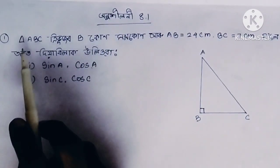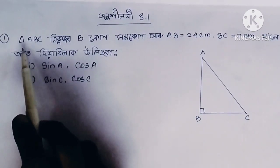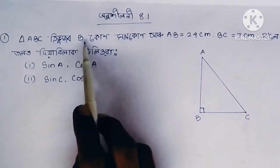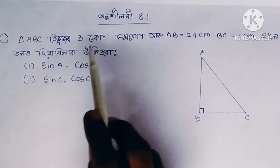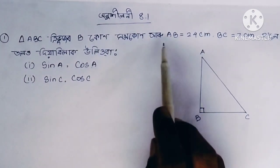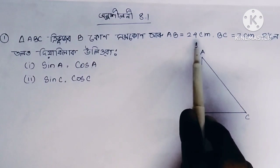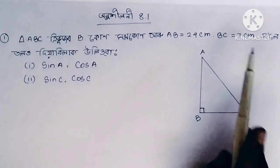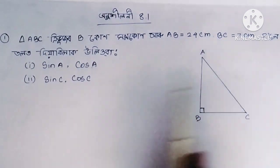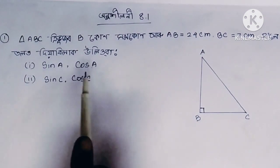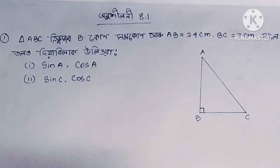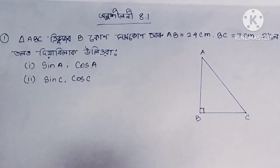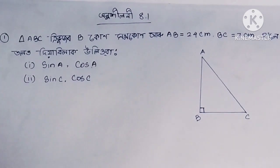This is Exercise 8.1. We have a triangle ABC. In this triangle, AC equals 24 cm and BC equals 7 cm. Now, this involves sine — let me show how to write the formula.